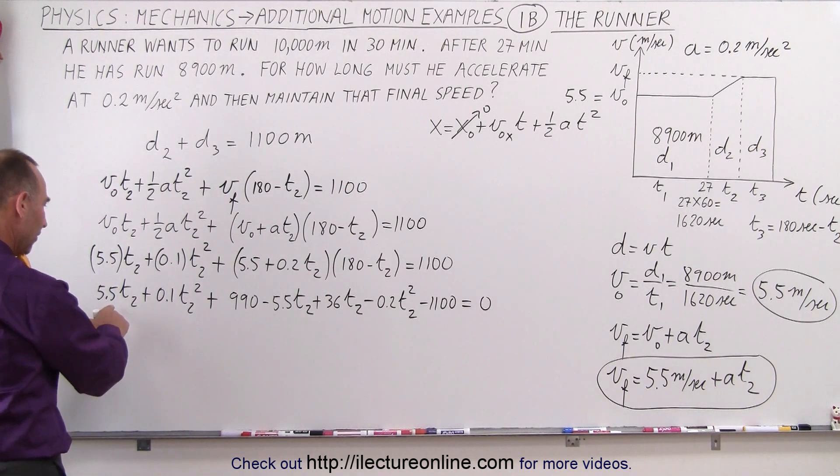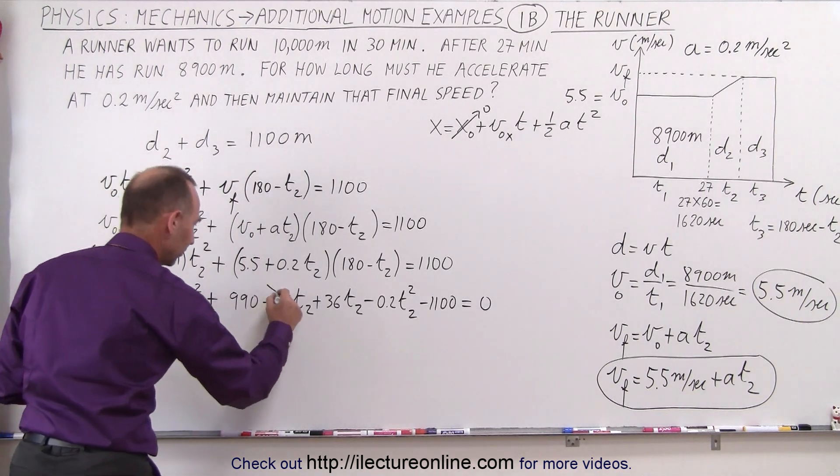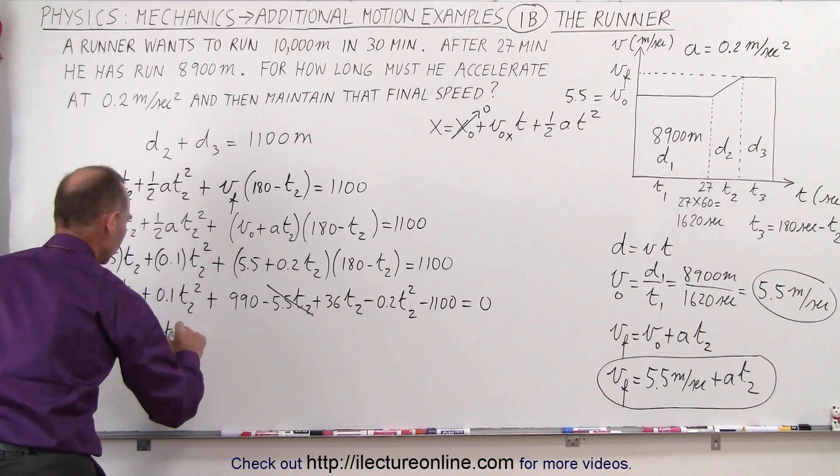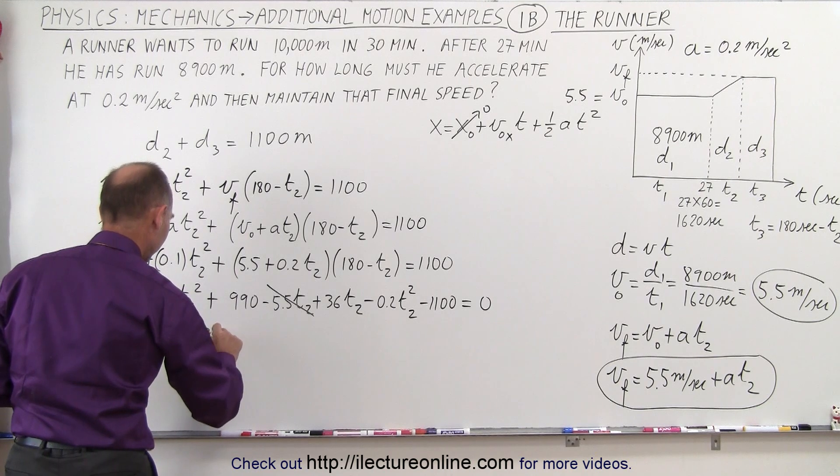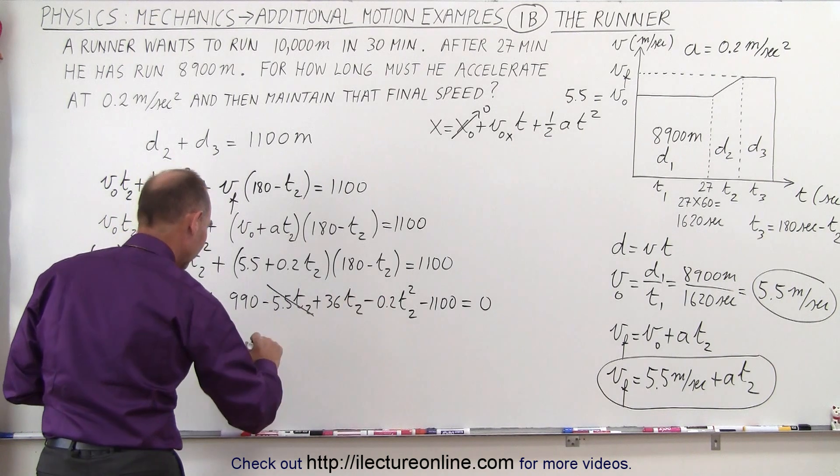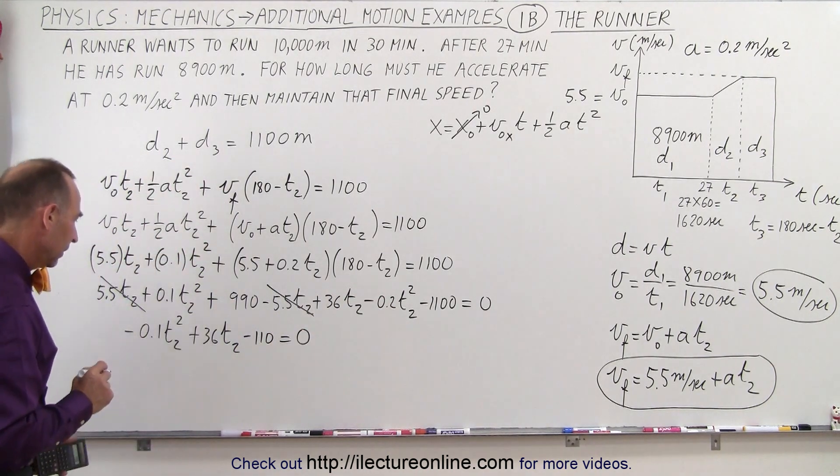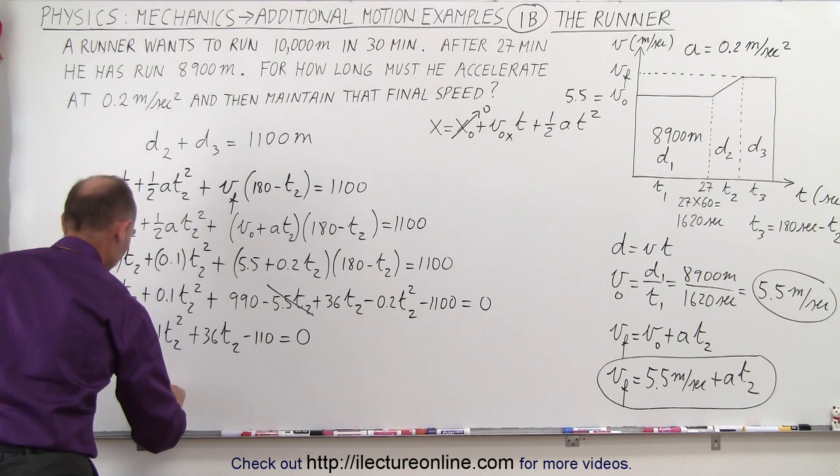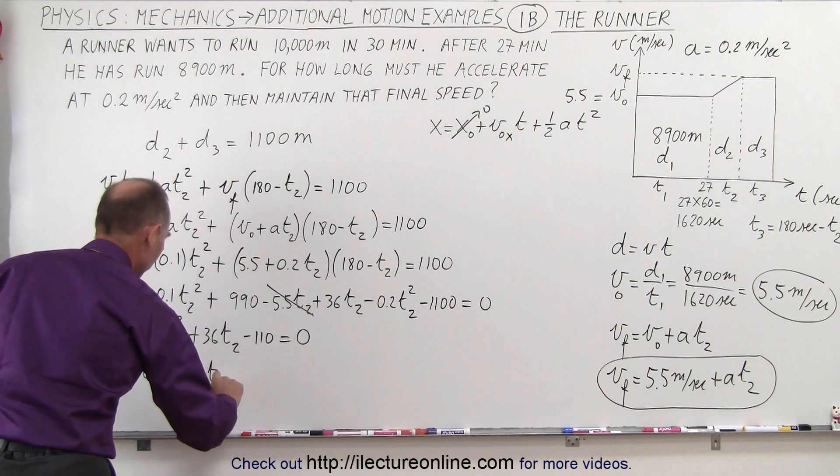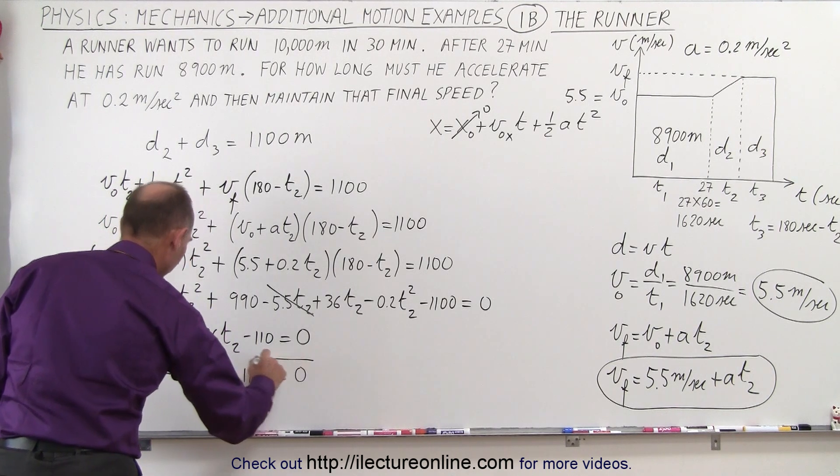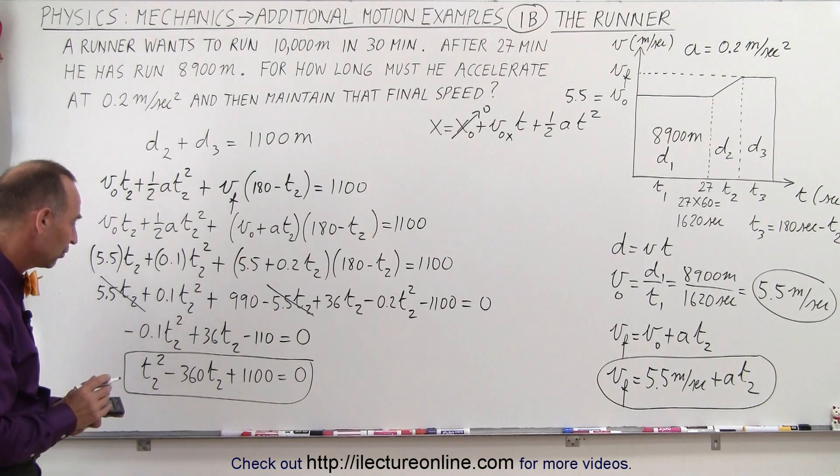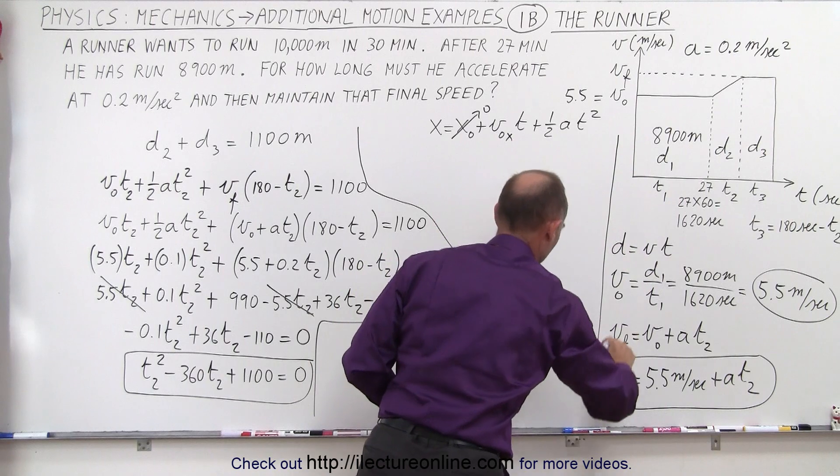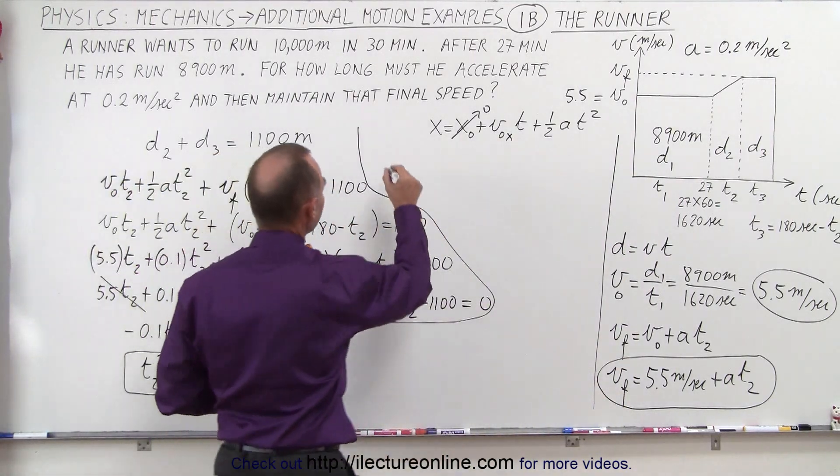Now let's combine like terms. We have 5.5 t2 minus 5.5 t2, so these could cancel out. A plus 0.1 and a minus 0.2, that gives me a minus 0.1 t2 squared. So it takes care of the t2 terms. We have plus 36 t2, and then plus 990 minus 1100, that's minus 110 equals 0. I'm going to multiply everything by a negative 10 to get rid of that decimal here, and the negative. So that gives us t2 squared minus 360 t2 and plus 1100 equals 0. So now I have a nice quadratic equation that I can solve for t2. Kind of running out of board space, but we could probably manage here. I'm going to put a little line here. So keep it clean. So I'm going to solve this equation for t2 to see what we get.